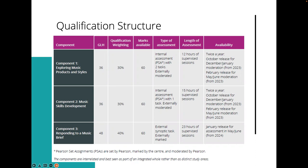When I go through the course, I'm actually going to start with component three — the external one — because I think it's important when planning that we think about where our learners need to be at the end. That will really inform what we need to do for the sessions for the components before that. It's really tempting to open the specification on page one of component one and start planning from there, but you'd put yourself at a disadvantage because you need to know where learners need to be when they get to the end of component three.